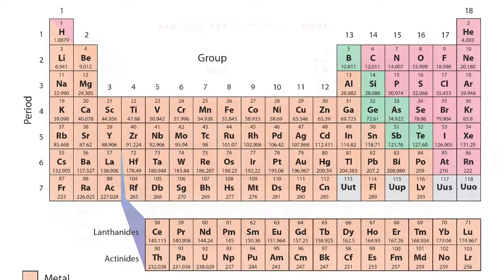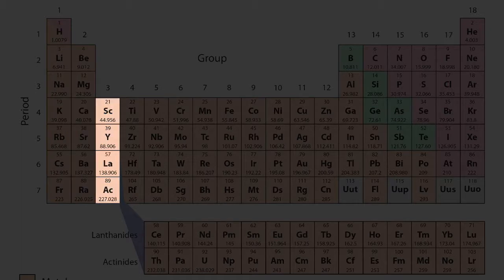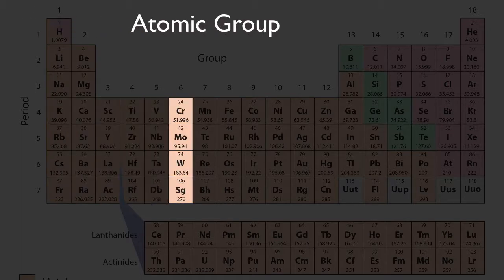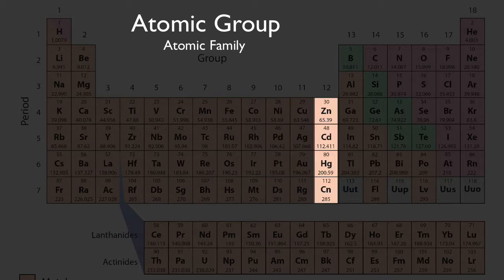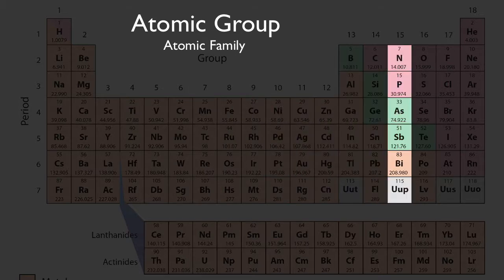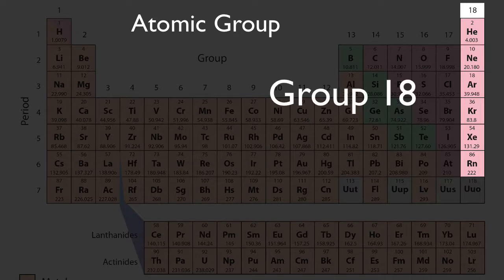A vertical column in the periodic table is called an atomic group, or sometimes an atomic family. Elements within the same group, or family, share similar physical and chemical properties. All the group 18 elements, for example, they're inert gases. We call these the noble gases.